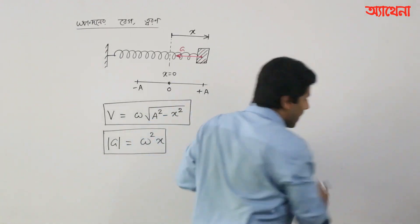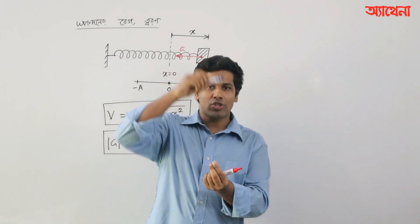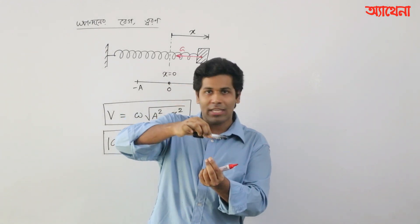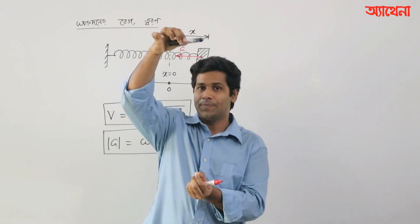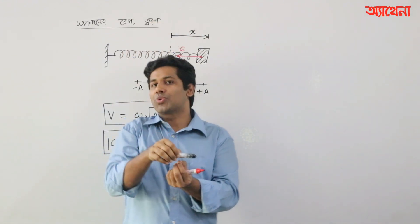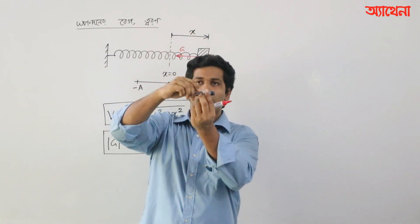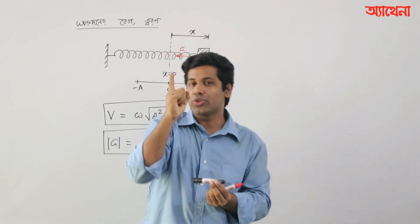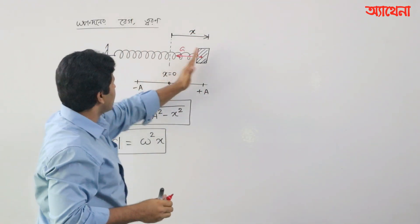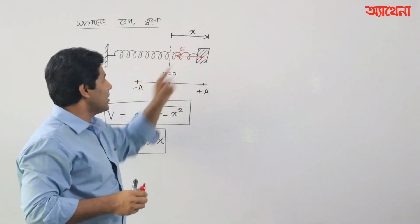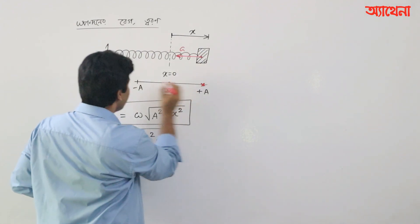First, we have to simply take a look at what is going to happen here. If I go to the left — the left starting point — the left is zero. What do you mean by turning point? Turning point is the A point and the negative A point.